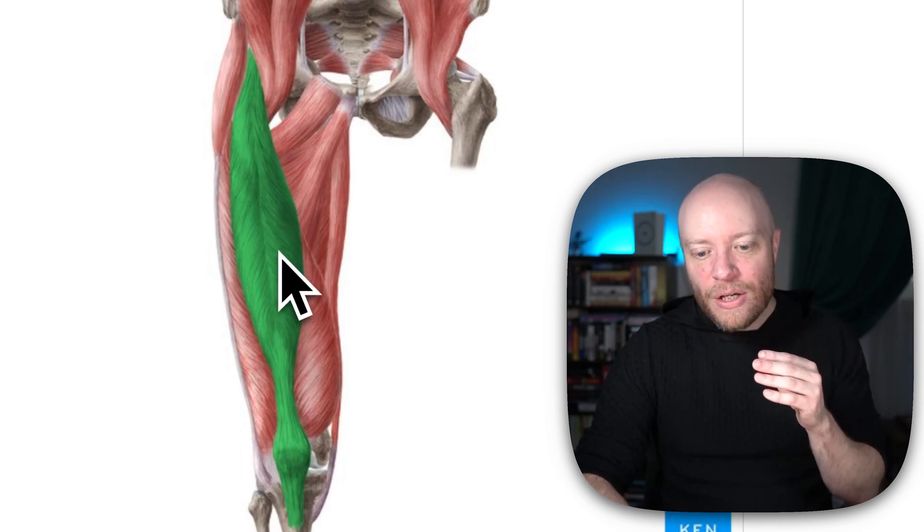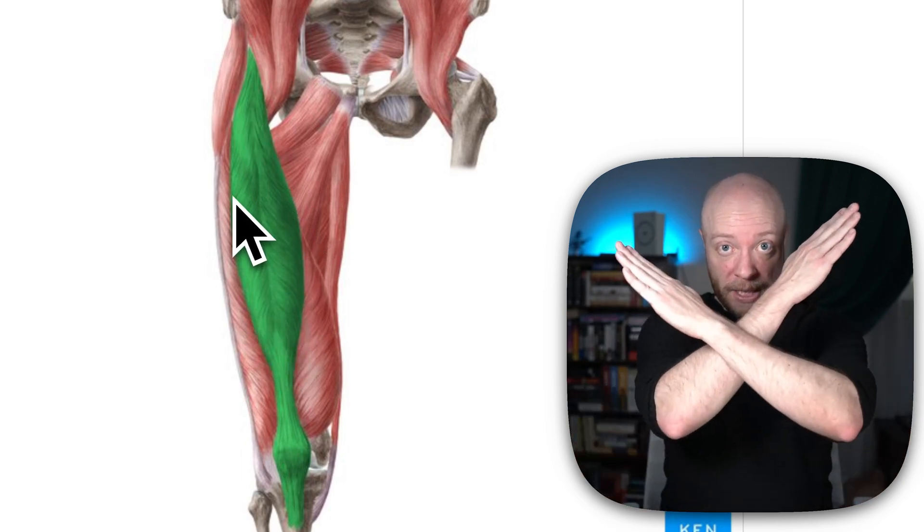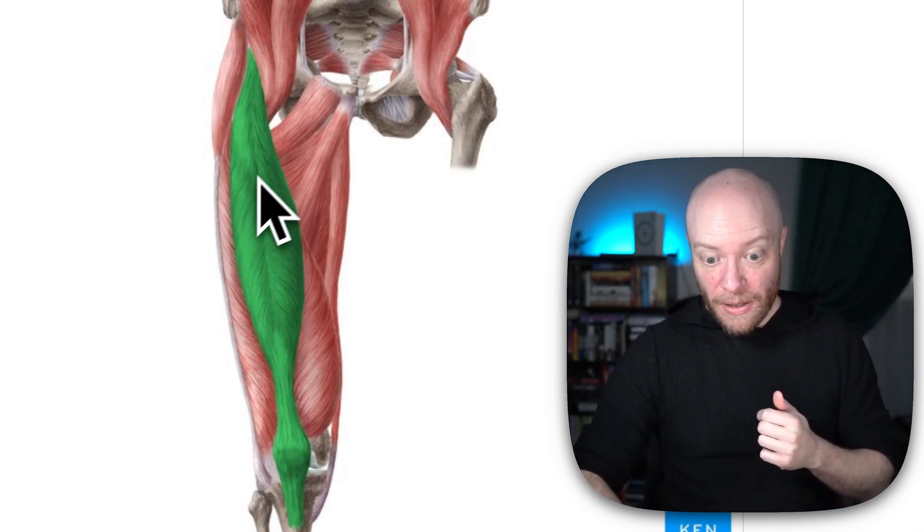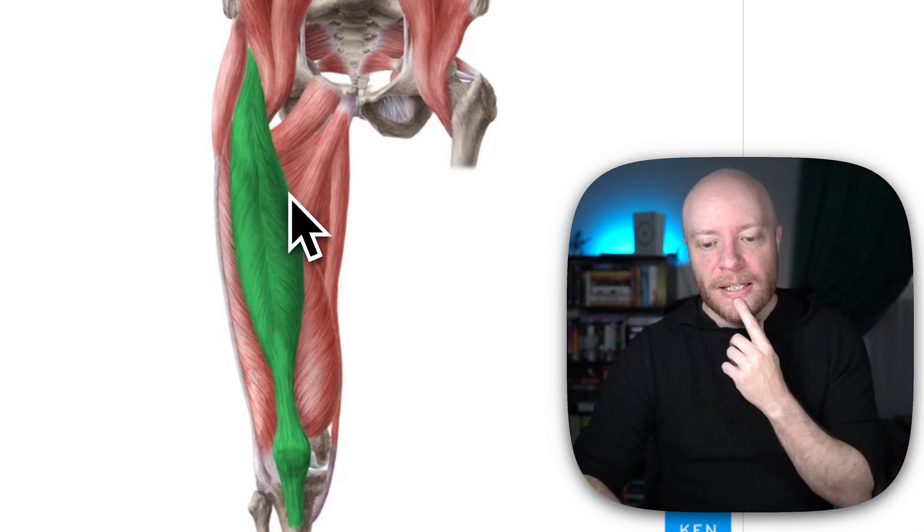And then on either side, you have muscle cells going at oblique angles, but they're perpendicular to each other. It creates kind of like a chevron shape as you just mirror it from one side to the other.